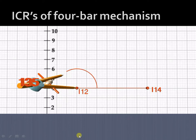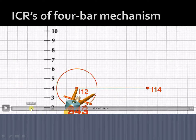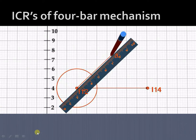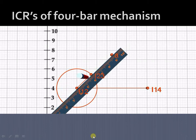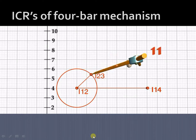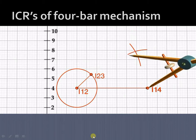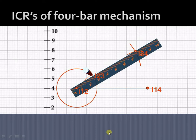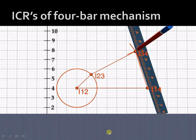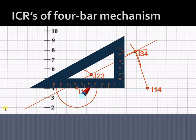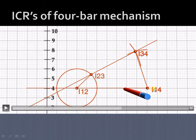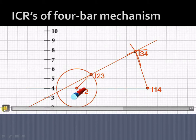In the animation, first draw the fixed link — we know these are I₁₂ and I₁₄. Then draw the input link at an angle of 45 degrees, which forms I₂₃. From this point, draw an arc representing the coupler (intermediate link), and draw an arc for the output link — they intersect to give I₃₄. Now, to find ICR I₂₄, extend the line joining I₁₂ and I₁₄, and extend the line joining I₂₃ and I₃₄ — these two lines meet at the point which is I₂₄.